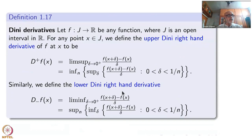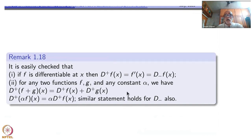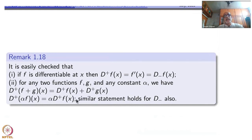So we have the symbols D+ for the upper right-hand derivative and D- for the lower right-hand derivative. It is easily checked that if f is differentiable at x, then D+ equals D- equals the derivative. For any two functions f and g and any constant α, we have D+(f+g) = D+f + D+g and D+(αf) = α·D+f — these are linearity properties of D+, following from the corresponding properties of lim sup.